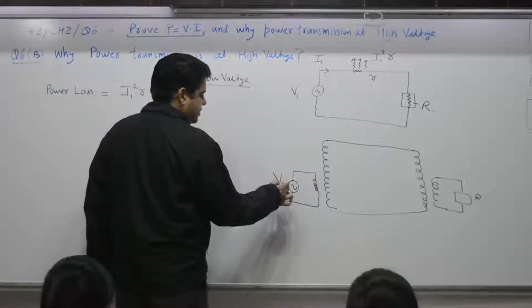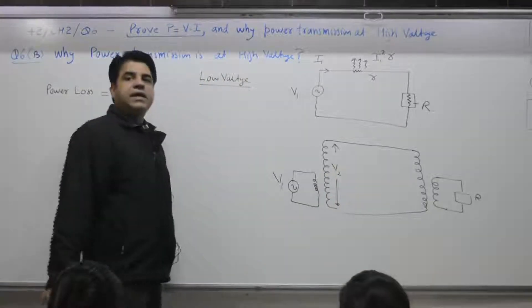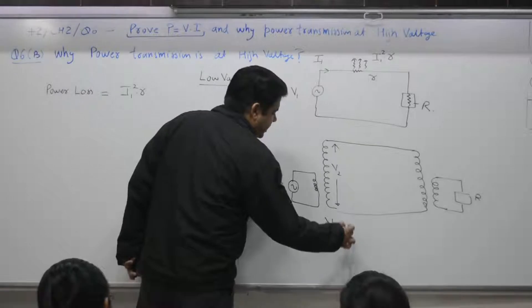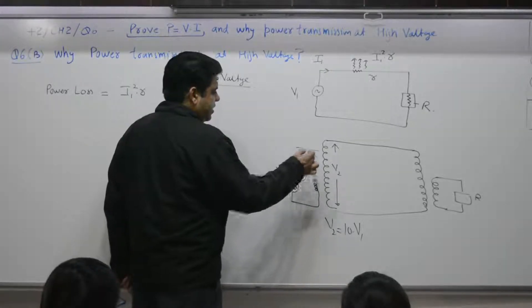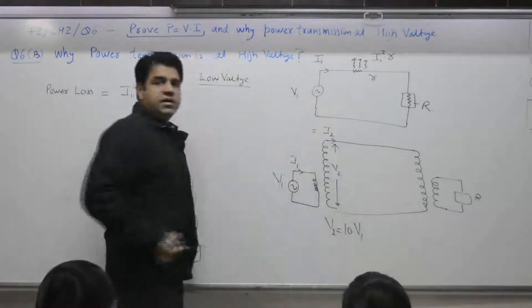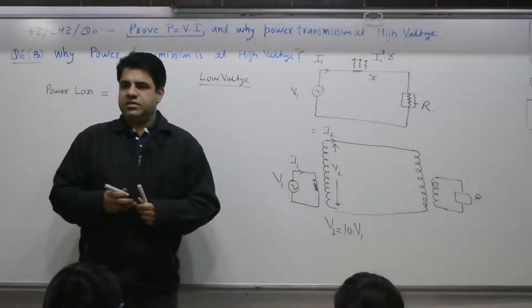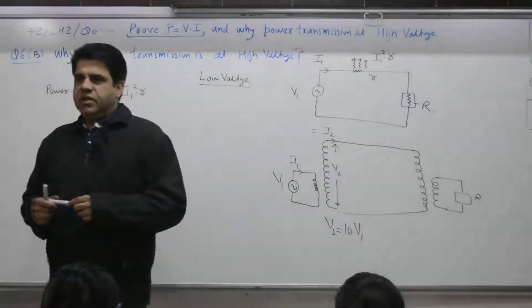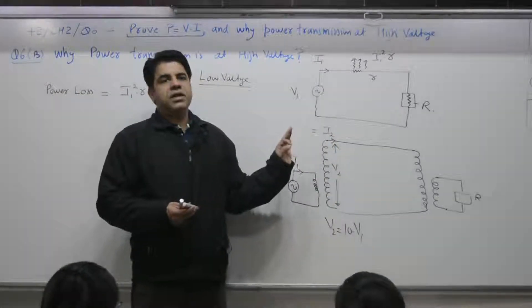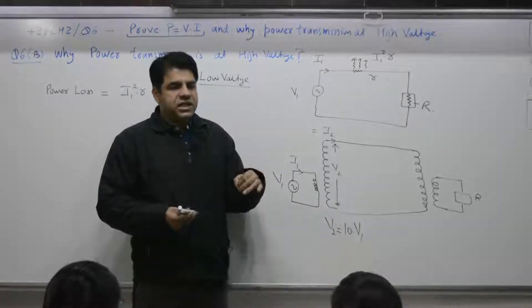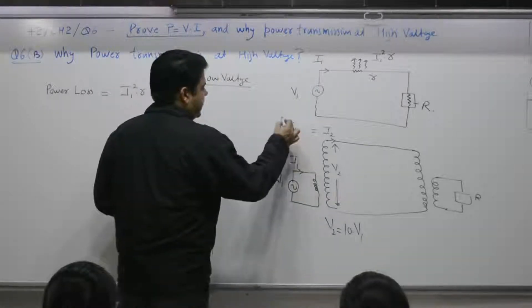Voltage. This voltage is V1. This voltage V2 is suppose 10 times. How many times? 10 times. Current I1. This current is I2. If you increase voltage to 10 times, current decreases to 1 by 10. Why? Anyone? Law of conservation of energy. Energy or power remains same. P is equal to V into I. If voltage is 10 times, current will be 1 by 10. So, I2 is equal to how much? I by 10. Correct? Suppose it is the same wire.